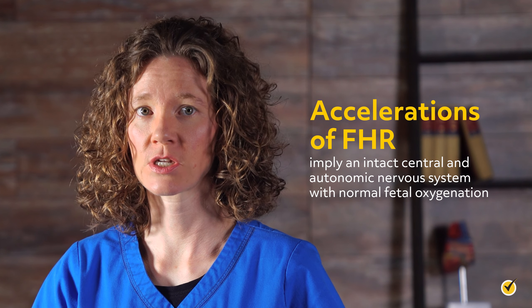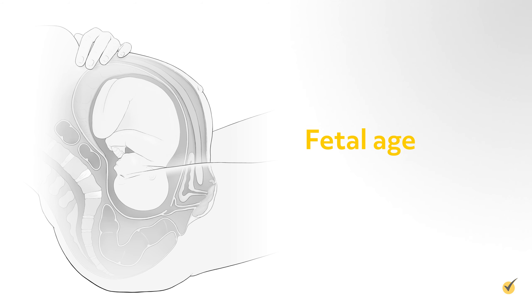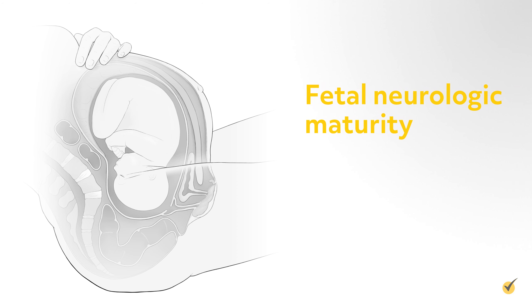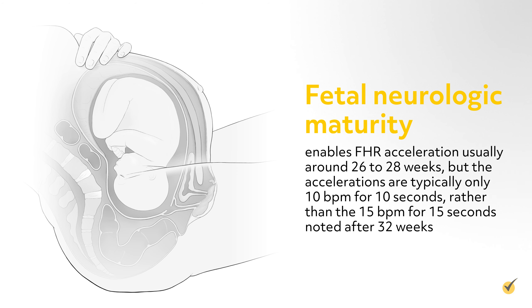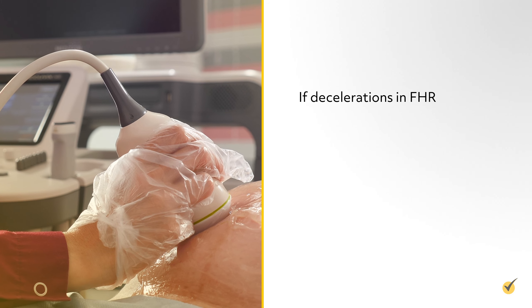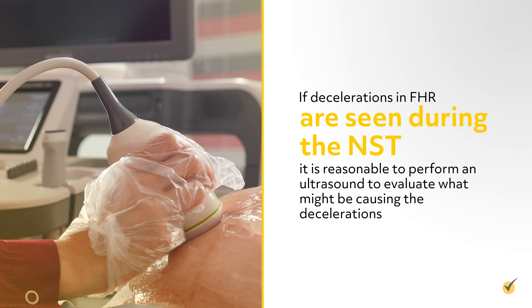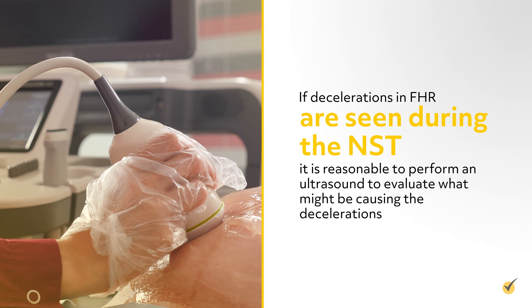The EFM is also used to monitor uterine contractions, with the use of the tocodynamometer, or TOCO, which is a flexible disc that responds to pressure. The TOCO is placed against the fundus of the uterus, which is the area of greatest contractility. As the uterus contracts, pressure is exerted against the TOCO and transmitted to the monitor. Uterine contractions can be assessed for frequency and duration. If an intrauterine pressure catheter, or IUPC, is inserted into the uterus, then the intensity of contractions can also be measured. An IUPC is part of the internal fetal monitor.